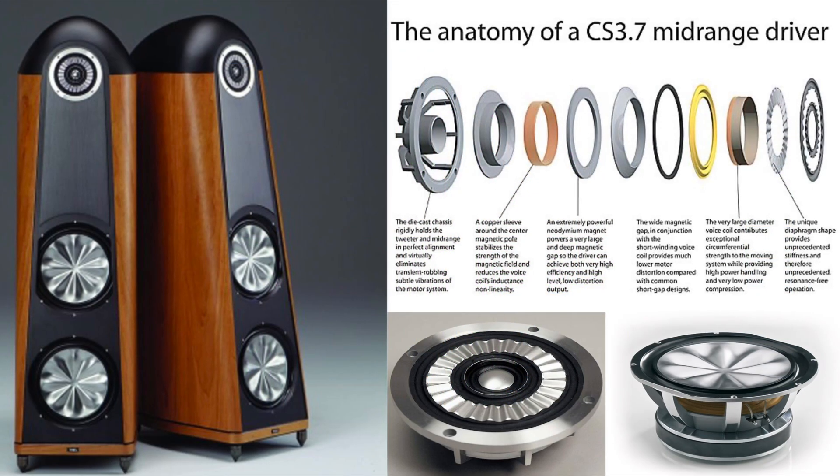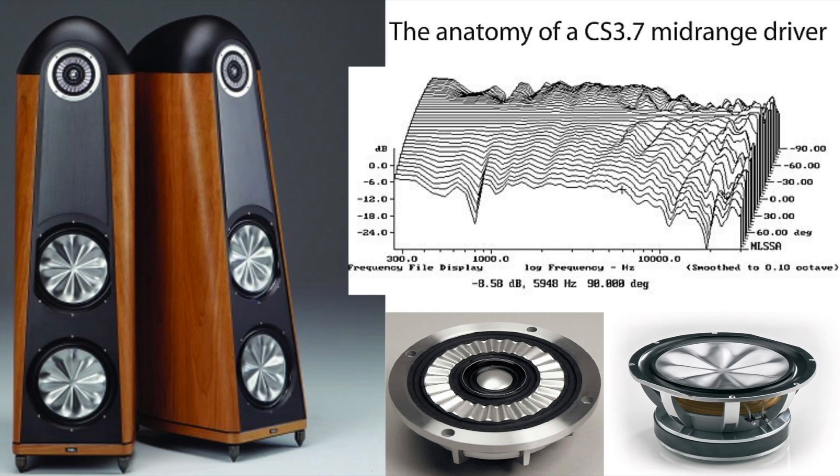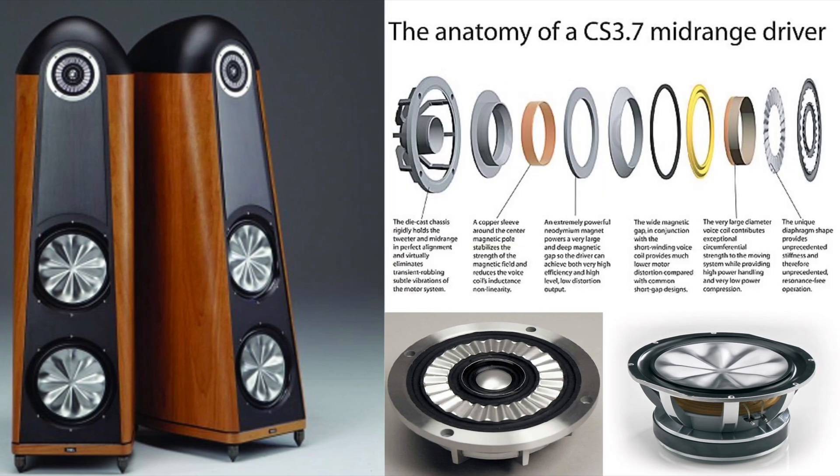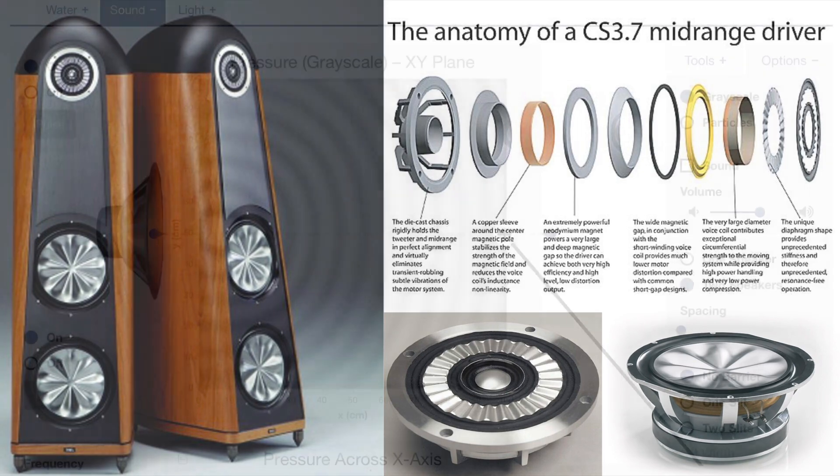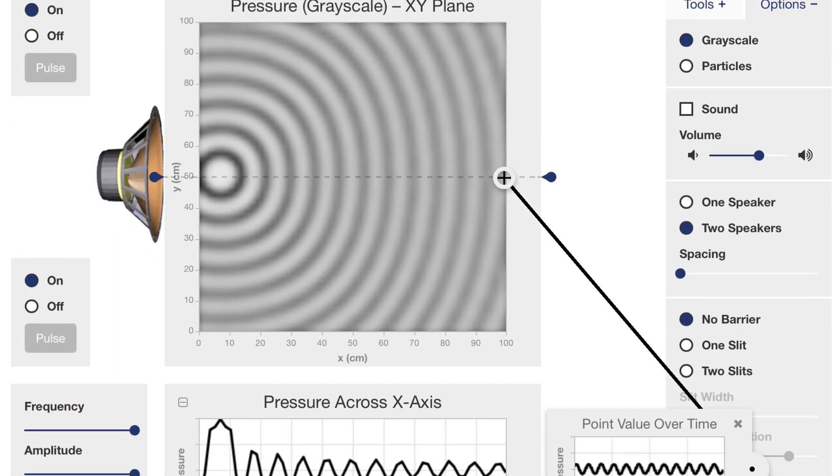Here is showing Thiel CS 3.7 speakers, which is another well-regarded wide dispersed speakers. It is using the coincident coaxial midrange tweeter driver to minimize their interferences. This will provide time accurate and phase coherent sound which gives you wider listening sweet spot.